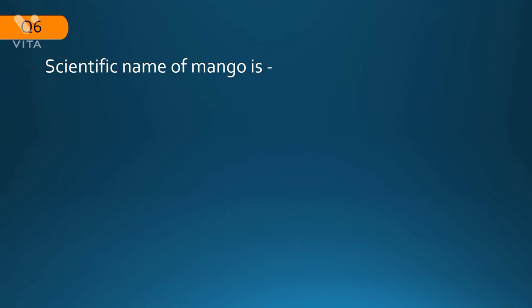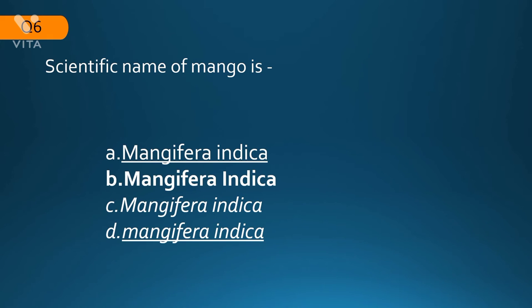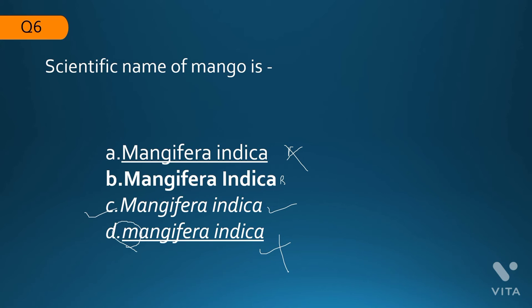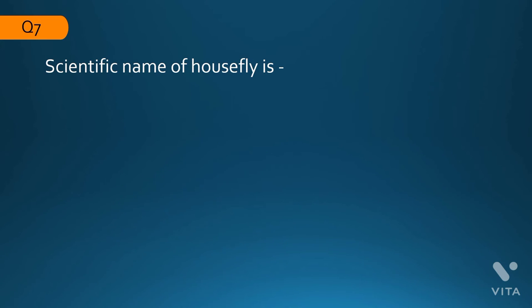The next question: what is the scientific name of mango? There are rules to follow according to nomenclature. The name must be written in italics — not in normal or bold letters. When handwritten, both words must be separately underlined. The genus name starts with a capital letter and the species name with a small letter, both underlined. The correct answer is option C — Mangifera indica.